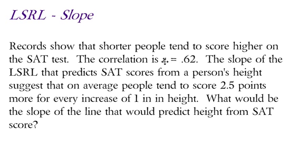But anyways, the correlation is r equals 0.62. The slope of the least squared regression line that predicts SAT scores from a person's height suggests that on average, people tend to score 2.5 points more for every increase of one inch in height. What would be the slope of the line that would predict height from SAT score?